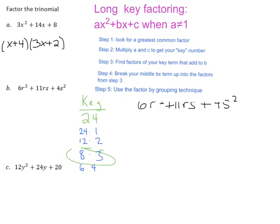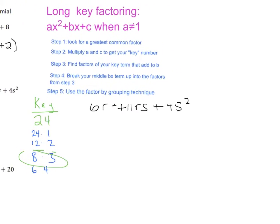And now I'm going to move over here. So we took care of step one, step two, step three. Now we're going to break our middle term up into our factors. So the first term stays the same. It's still going to be 6R². And then we're going to have a positive 8RS. It gets both the R and the S and a positive 3RS. And then we're going to have a positive 4S² at the end.